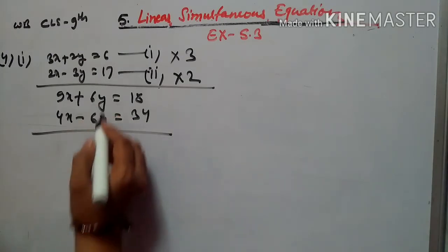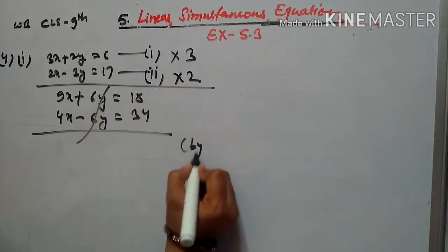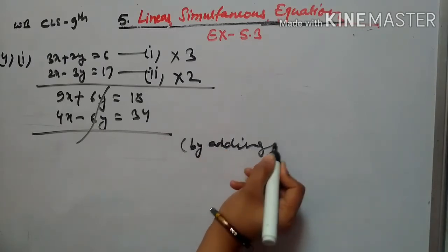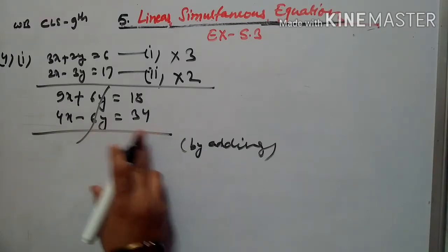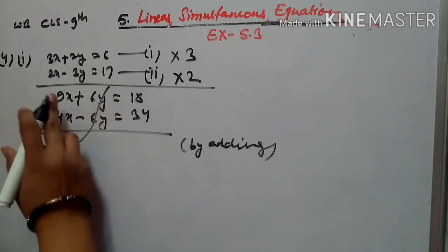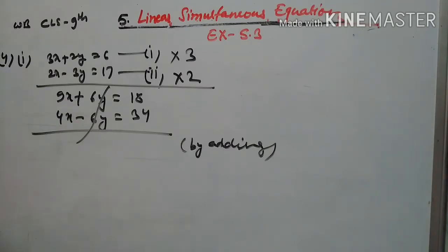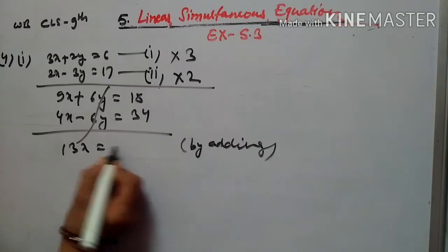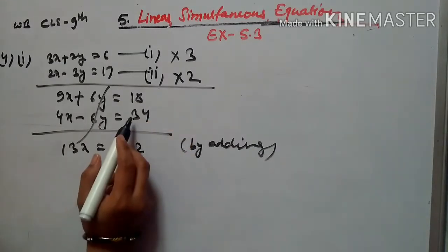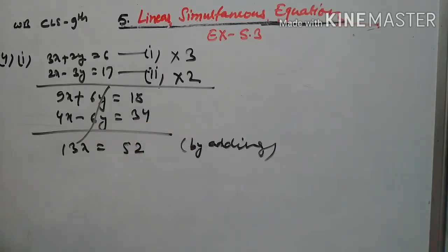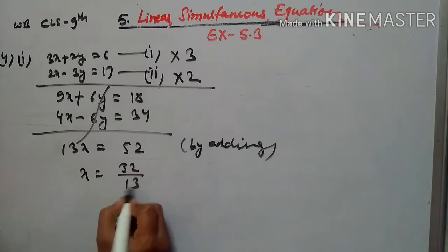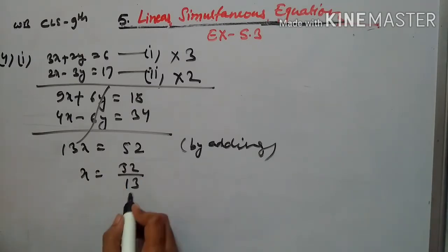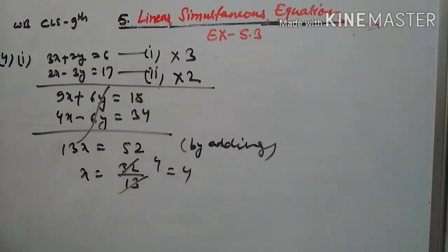Now we have plus and minus signs on the y terms, so by adding both equations, the y terms cancel out. We add: 9 + 4 = 13, and the constants give us 52. So 13x = 52, that is x = 52 ÷ 13 = 4. The value of x is 4.